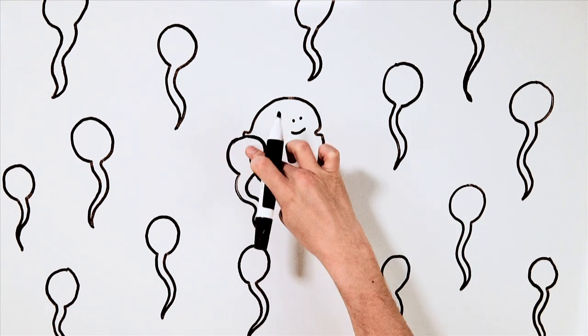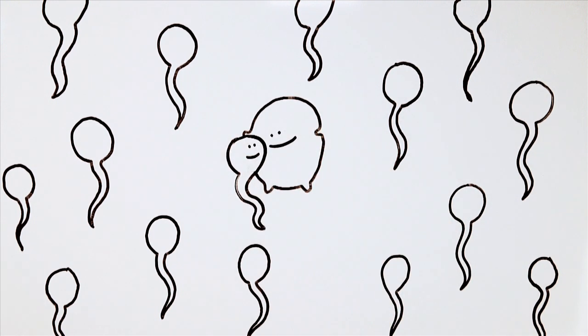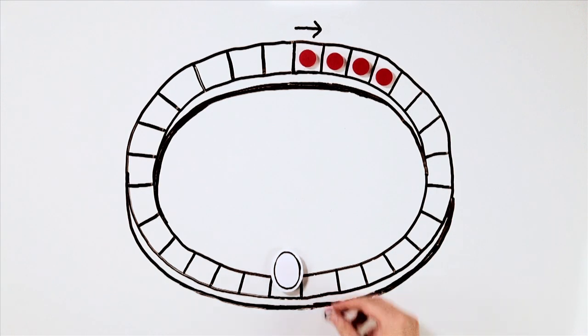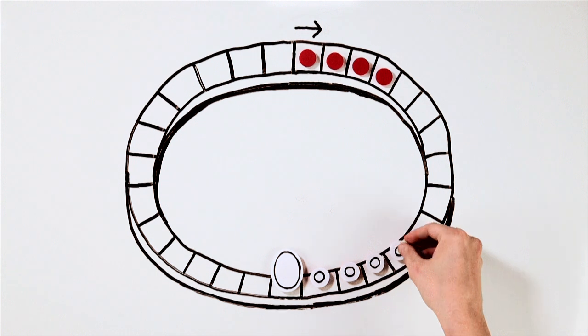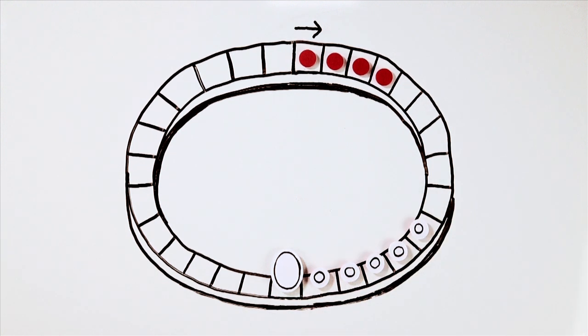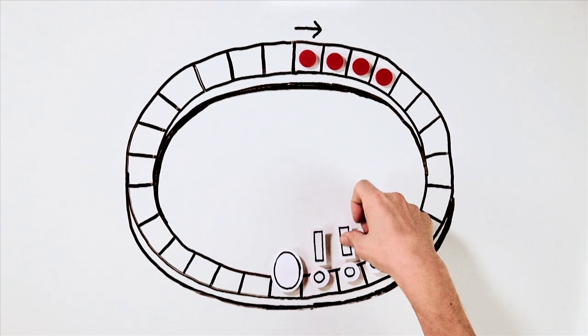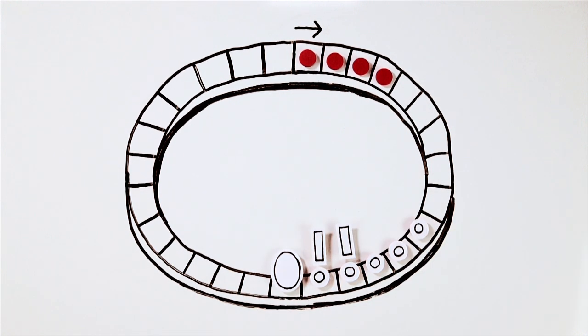The egg can be fertilized up to 24 hours after ovulation, while sperm can remain active for up to 5 days. It is thus possible to become pregnant up to 5 days before the egg is released. The chance of getting pregnant is greatest from 2 days before ovulation up to the ovulation itself.